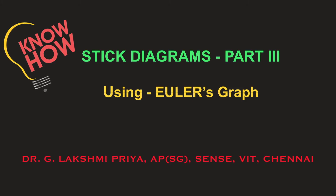Welcome to the next session on the Know-How series. This video is about stick diagrams. The first two parts covered the basics of stick diagram rules, how color codes convey layer information, how to convert a boolean expression into a schematic, how to obtain the Euler graph for the pull-up and pull-down networks, and how to trace the common Euler path. Video links are provided in the description box below.